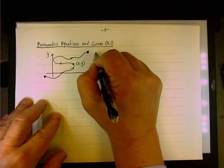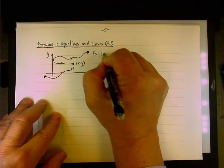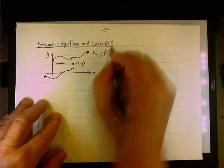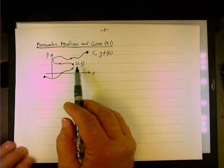So although this curve, let's say this is C, but the curve C, we cannot write it as y equal f of x. Again, because it failed the vertical line test.